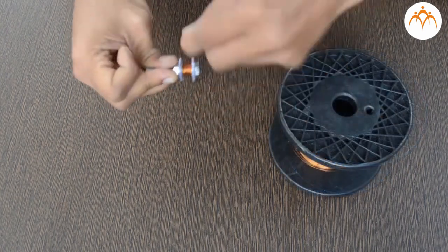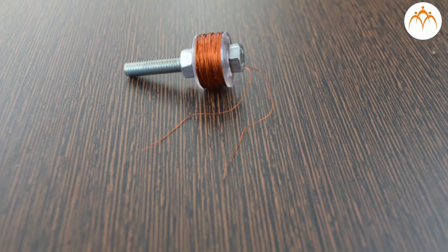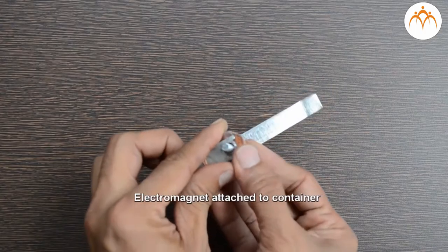Wire is wound around 400 times. This is fixed to a plastic container with nut and screw.